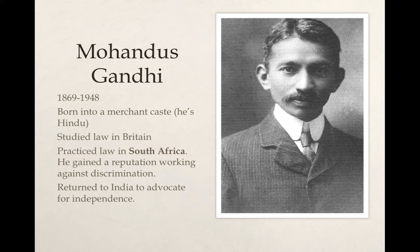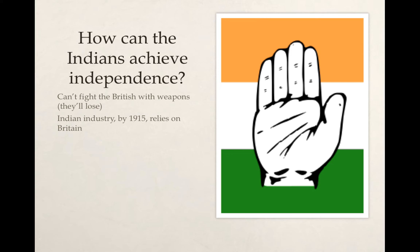He later returned to India to advocate for independence. What he was really struggling with was the fact that the Indians couldn't just fight the British — that wouldn't work. They'd tried that. The British had more dominant technology, and it would result in a long drawn-out bloody conflict. Not only that, in 1915 the Indian industry really relied on the British. So even if the Indians did win independence, if they didn't already develop an economy, they would be left really vulnerable with no way to make money. The Indians basically needed a way to have independence while still maintaining a strong economy.